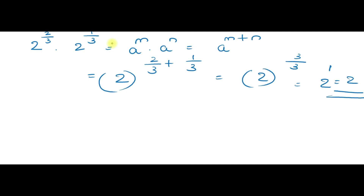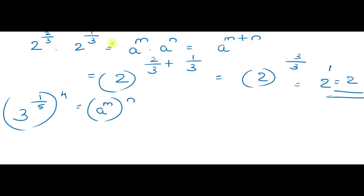Second question: 3 raise to 1 by 5, all raise to 4. This is of the form A raise to M into N, which equals A raise to MN. That means 3 raise to 1 by 5 into 4, which can be written as 3 raise to 4 by 5.